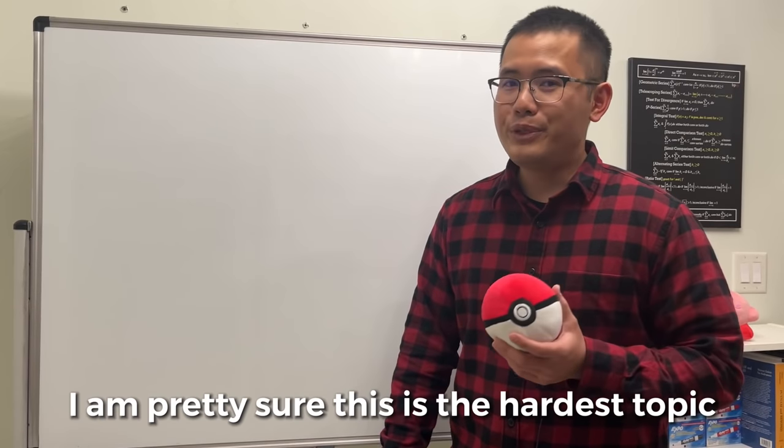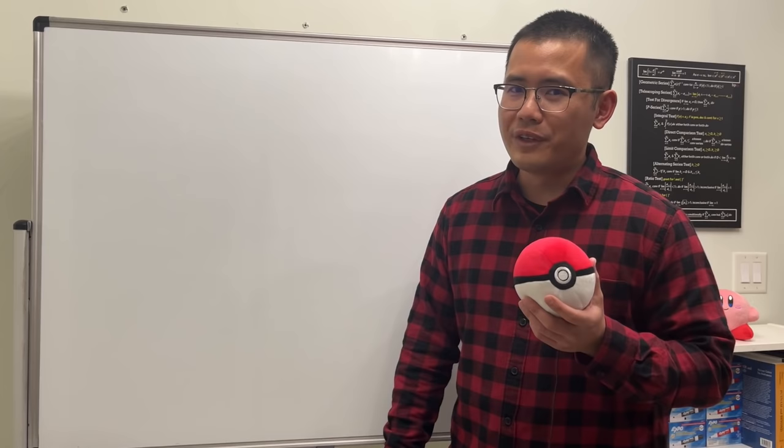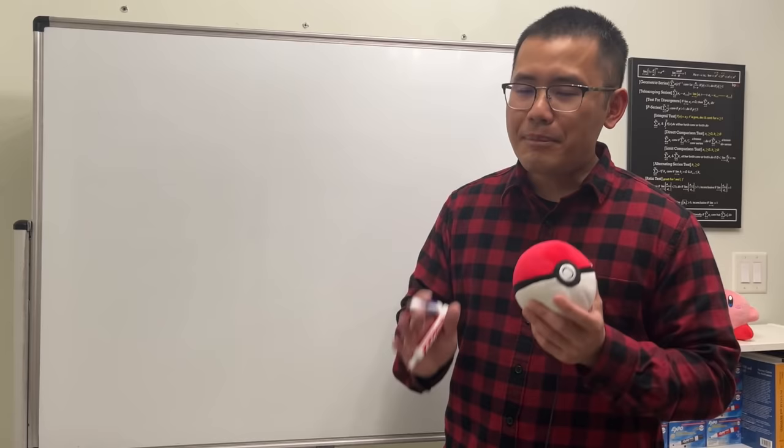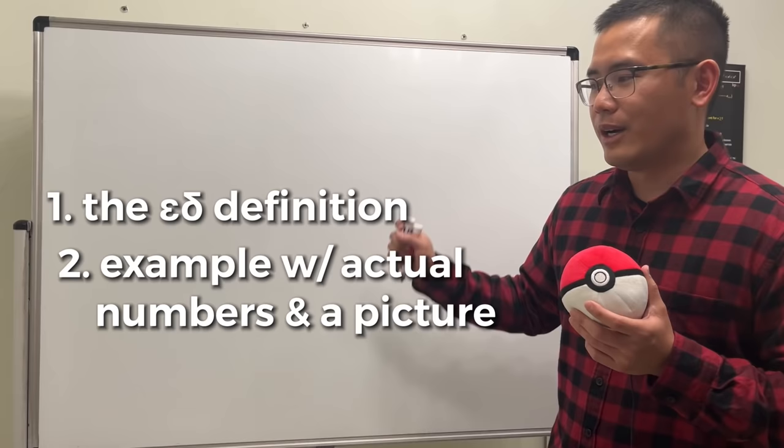I am pretty sure this is the hardest topic in calculus one — yes, we are talking about the epsilon-delta definition for proving limits. The first thing we have to do is calm down; it's not so bad. I'm going to show you the definition, explain it with an actual example and picture, and show you how to write a proof using the four-keyword method.